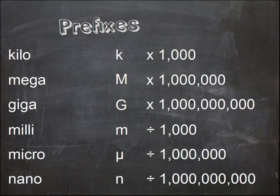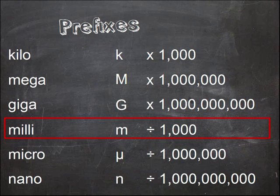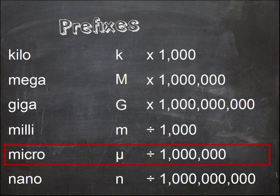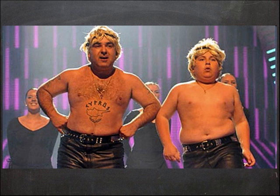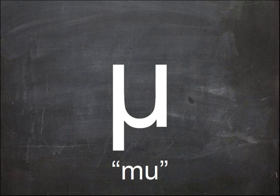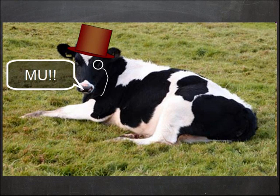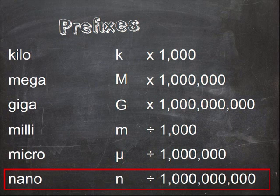Let's go smaller now. Wee m is for Milli, which is a thousand times smaller. Mu is for Micro, which is a million times smaller. This one's weird because we've got a mad Greek letter — the letter Mu. If you forget what it is, just think about cows. Glasgow cows say 'Mu,' but your heavy posh cows from Edinburgh say 'Mu.' Last one is wee n, which is for Nano, and it's a billion times smaller.